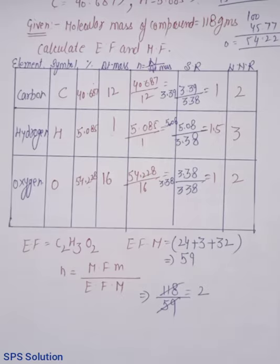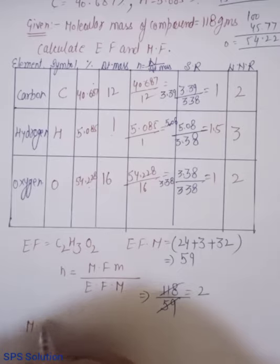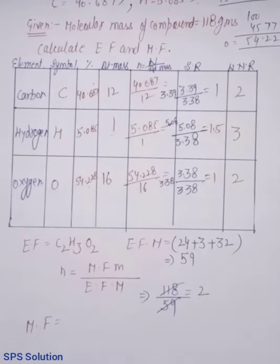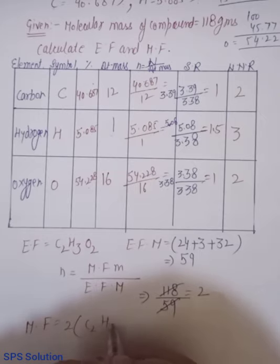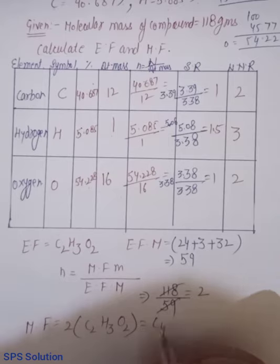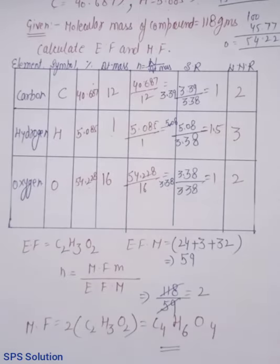Ab kya reh gaya hai? Kuch nahi karna hai. Is 2 se empirical formula ke har ek atom ko hum multiply kar denge aur jo bhi answer hoga, that will be our molecular formula. So, molecular formula is equal to, it is 2 into C2H3O2. So, it comes out to be C4H6O4. This is our molecular formula. So, beta, this is how we have to calculate molecular formula or empirical formula.